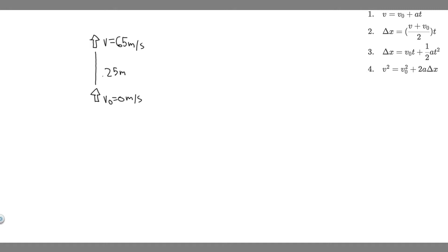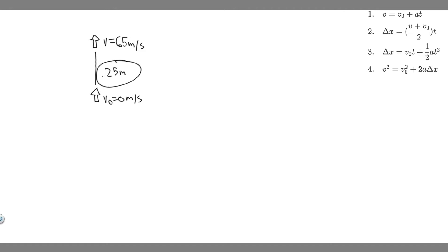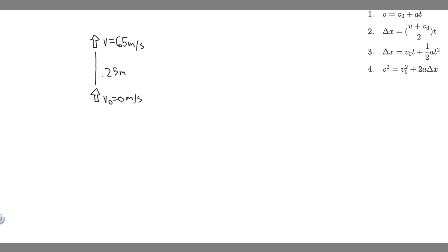The first thing you always want to do is draw what's going on. So imagine this is our firework. We know the initial velocity of this firework shell is going to be 0 meters per second. Then it travels upward a distance of 0.25 meters, and at the end of this distance its velocity is going to be 65 meters per second. What we're trying to do is solve for how long did this last, so we're trying to find T, and we're also trying to find the acceleration, so we're trying to find A.